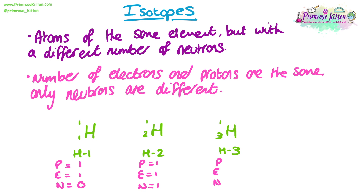The third and final isotope, H-3, has an atomic number of one and a mass number of three. There is still one proton and one electron, but there are now two neutrons in the nucleus, since one proton plus two neutrons gives a mass number of three. Isotopes are very common on GCSE exams, so it's worth making sure you understand how they work. The atomic numbers will always be the same, but the mass numbers will be different when isotopes are present.